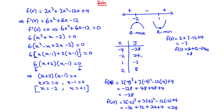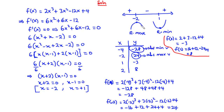The maximum value of y is 24, which is the absolute maximum value. The lowest value of y is -28, which is the absolute minimum value. The relative maximum occurs at x = -2, and that value is 24, so the relative maximum is 24. The relative minimum occurs at x = 1, with a value of -3. That's it for today's video.